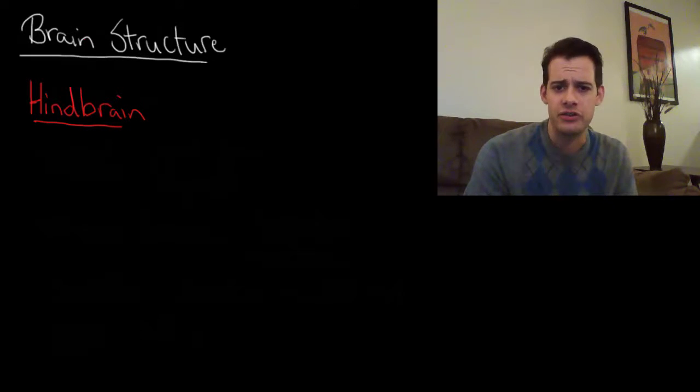Now you might also see reference to the old brain and the new brain and this is just a way of talking about brain structures in terms of evolutionary time. So the old brain refers to areas of the brain that have been with us the longest, structures that are necessary for survival and so we basically always had them. And these would be parts of the hindbrain and the midbrain whereas the forebrain can sometimes be referred to as the new brain because this controls complex processes and behaviors that arose later in evolutionary time. So they haven't been with us quite as long.